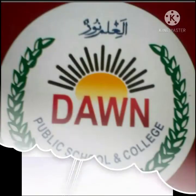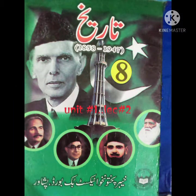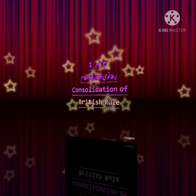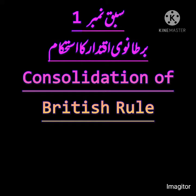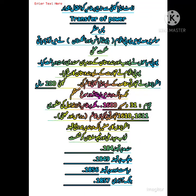بسم اللہ الرحمن الرحیم، assalamu alaikum، Dan Public School and College میں خوش آمدید۔ یہ آپ کی history class ہے اور یہ lecture نمبر دو ہے۔ آج ہم Chapter نمبر ایک پڑھیں گے: برطانوی اقتدار کا استحکام - Consolidation of British Rule۔ آج کا ٹاپک ہے East India Company سے تاج برطانیہ کو انتقال اقتدار - Transfer of Power۔